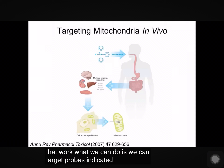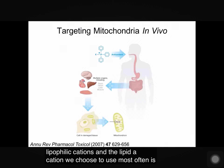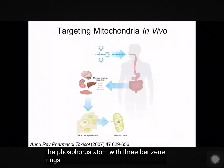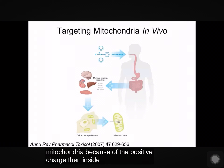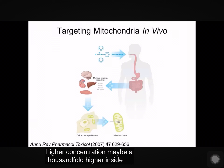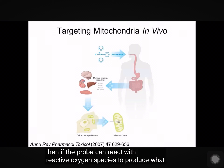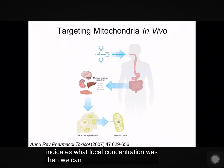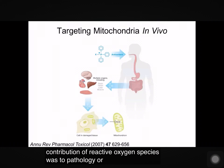What we can do is target probes — indicated by X — by conjugating them or linking them to lipophilic cations. The lipophilic cation we use most often is triphenylphosphonium, with a phosphorus atom with three benzene rings around it. This has the property of being dragged into cells and into mitochondria because of the positive charge. Inside the mitochondria, it accumulates at a far higher concentration — maybe a thousand-fold higher inside mitochondria than elsewhere in the cell. This means that if we attach a probe to the phosphonium, we'll have that probe localized to mitochondria in vivo. If the probe can react with reactive oxygen species to produce an exomarker — something that indicates what the local concentration was — then we can assess those later and infer what the levels of reactive species were inside the experimental animal, and thereby figure out the contribution of reactive oxygen species to pathology or to a particular redox signaling pathway.